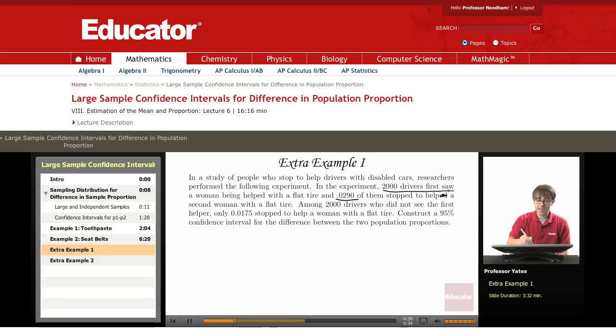Among 2,000 drivers who did not see the first helper, only 0.0175 stopped to help a woman with a flat tire. Construct a 95% confidence interval for the difference between the two population proportions.